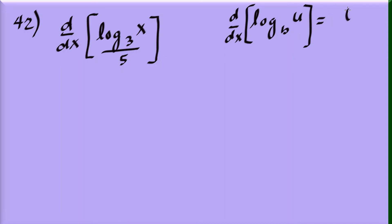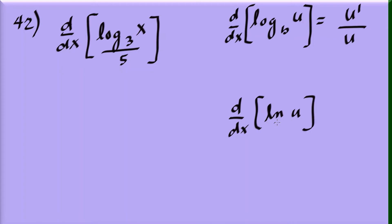This makes sense because the natural log of u is really the logarithm base e, and ln e equals 1, which is why the natural log formula simplifies to just u prime over u. For any other base b, we multiply the denominator by ln b.